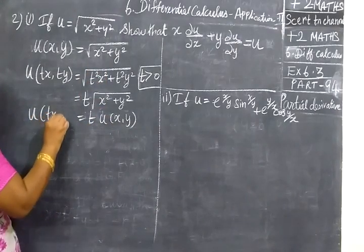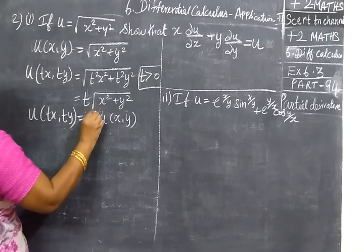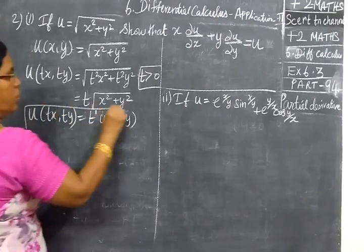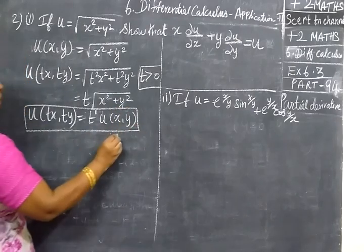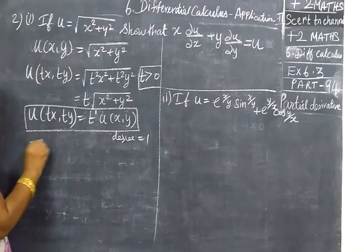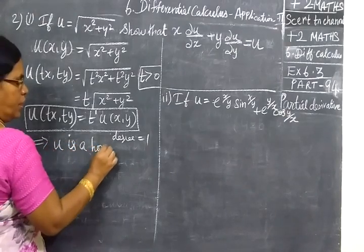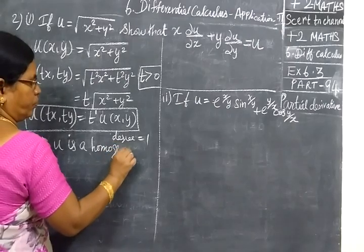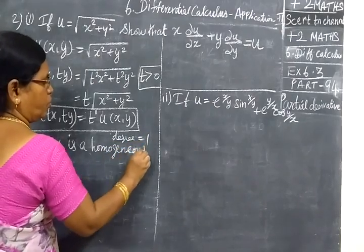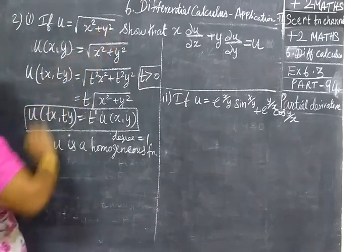Here we are writing u of tx, ty equal to t to the power 1 times u of x, y. This is the condition — u is raised to the power of t with degree 1. This implies u is a homogeneous function of degree 1.